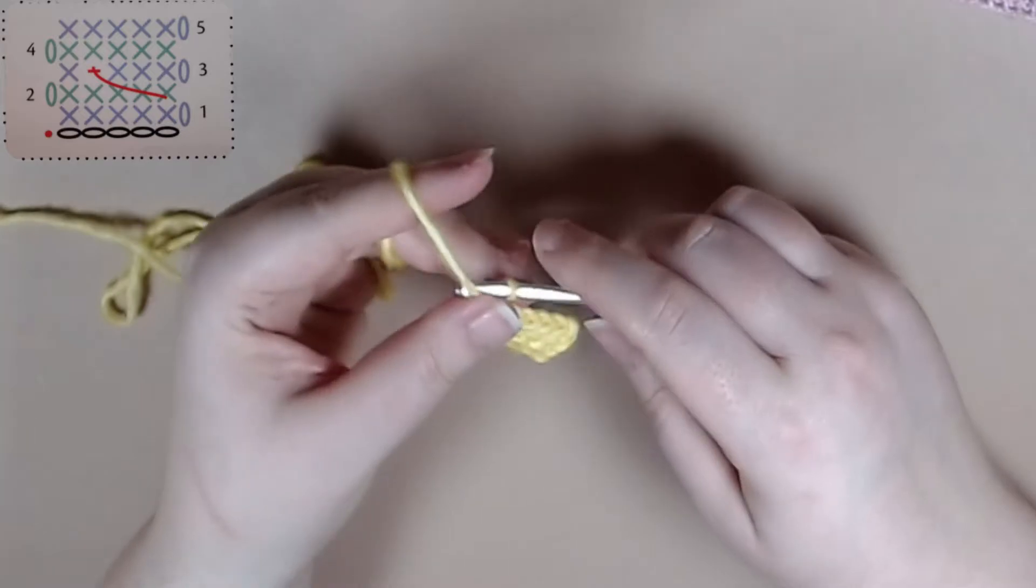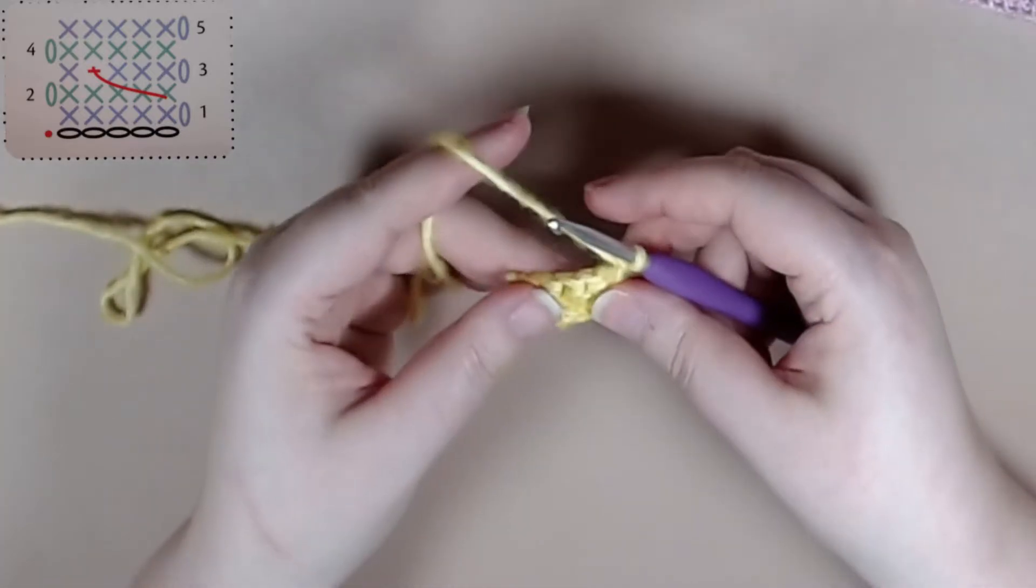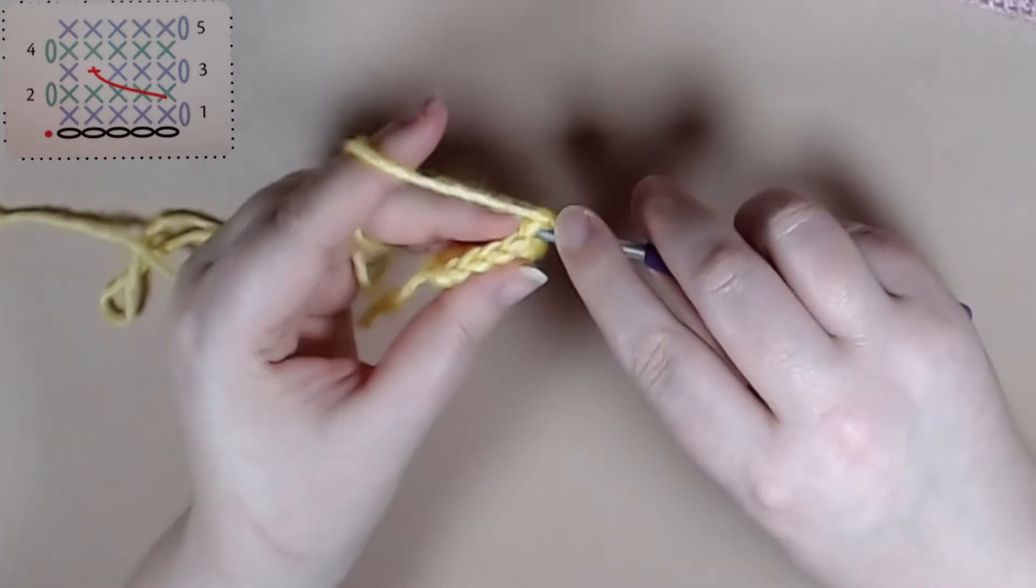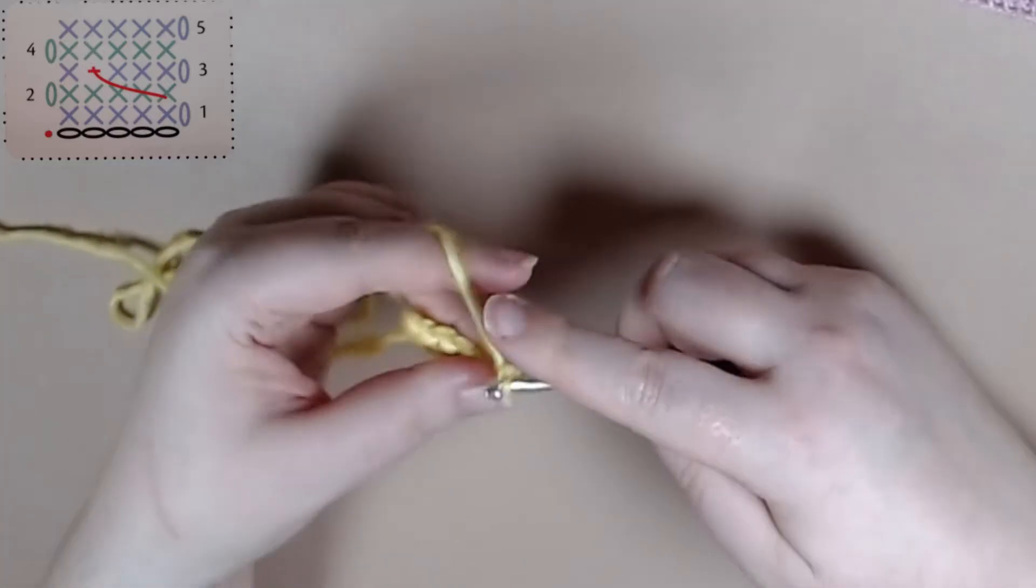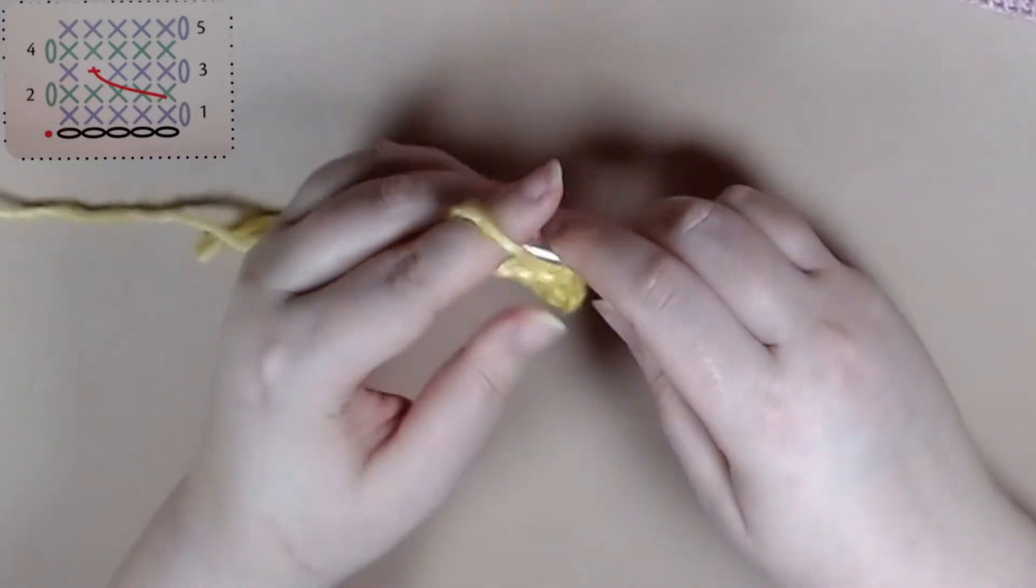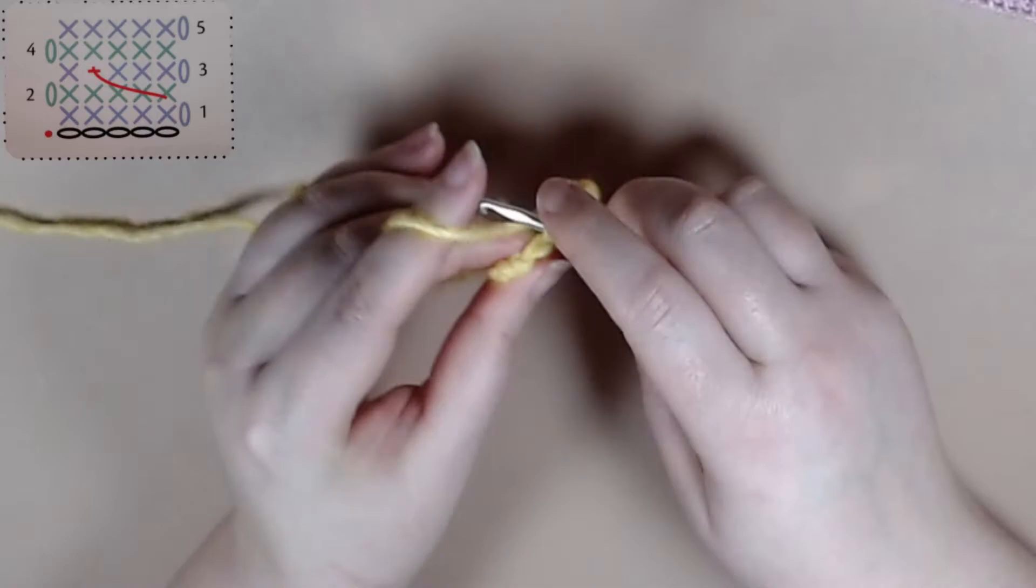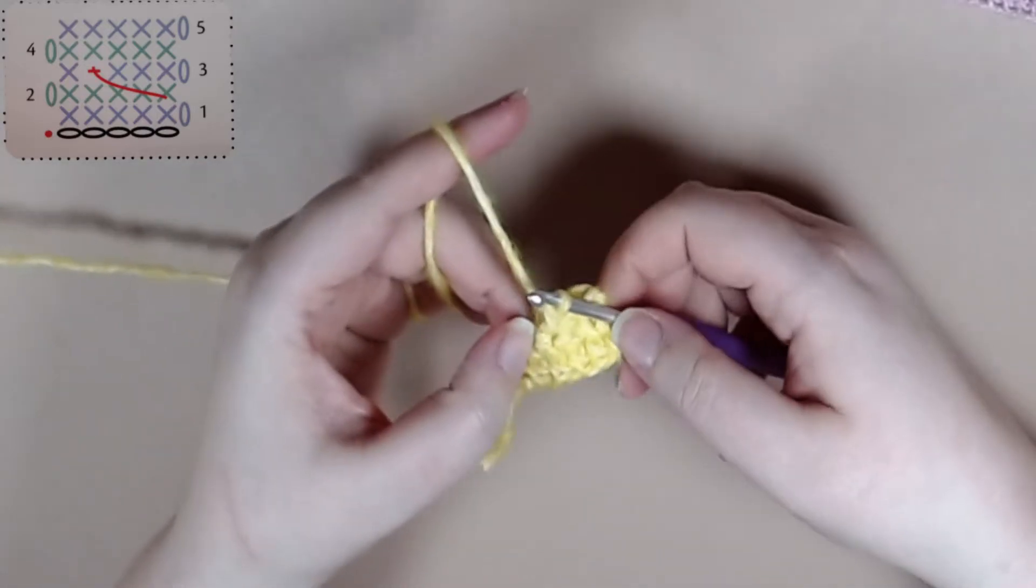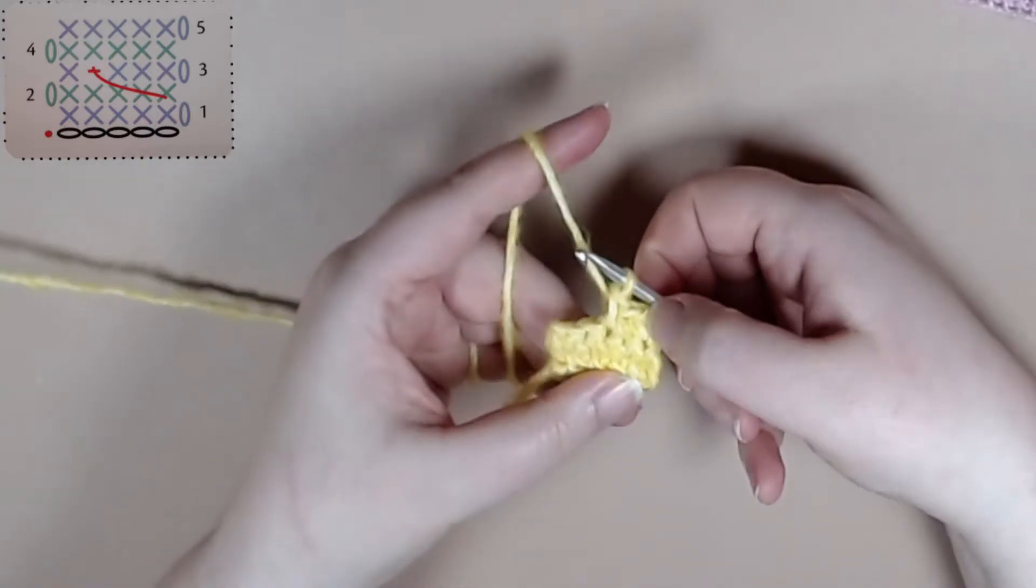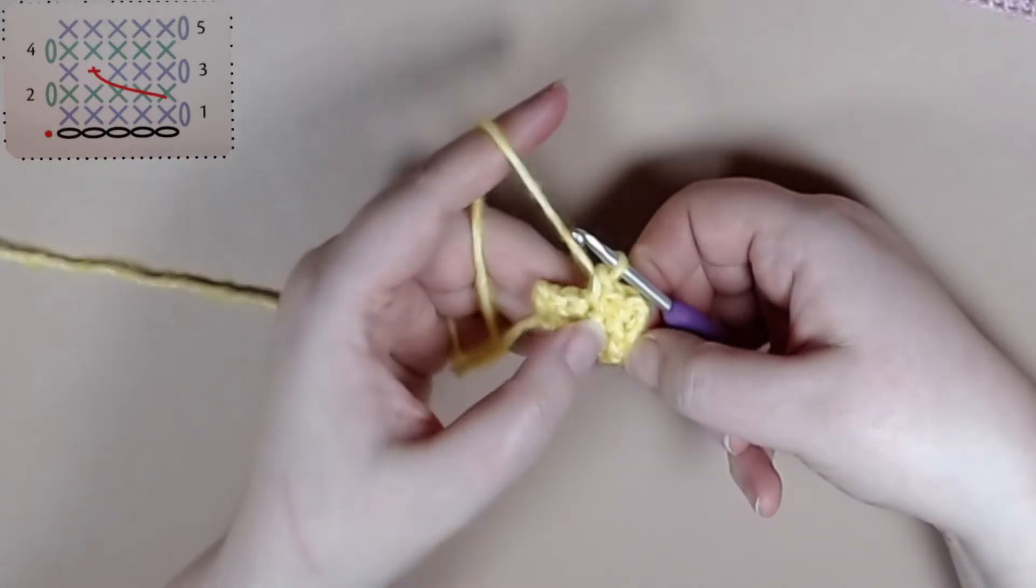Alright, for row three we are going to chain one and turn our work and we're going to single crochet in the first three stitches. Our next stitch will not be in the next one that follows but it'll actually be three stitches back from the previous row.